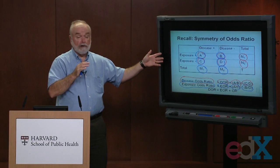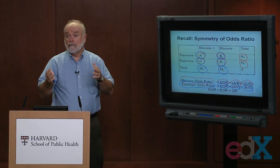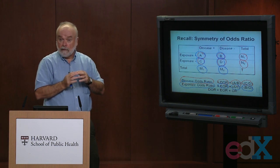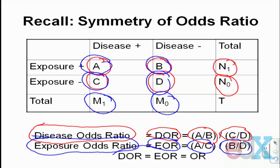Taking their ratio gives the exposure odds ratio — A over C divided by B over D — let's call that EOR. Here's the kicker: mathematically, the disease odds ratio and the exposure odds ratio are one and the same. That's one of the nice features of odds ratios from a 2x2 table. We just call it the odds ratio.